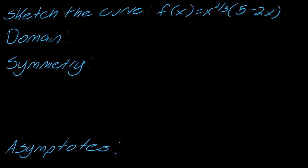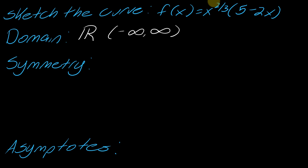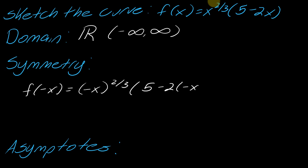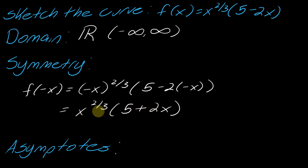For my domain: this rational exponent is really a cube root, and with cube roots the domain is all real numbers. So the domain of the whole thing is all real numbers. For symmetry, plug in negative x and work it out — that gives x^(2/3) times (5 plus 2x), which is neither negative f(x) nor f(x) itself, so there is no symmetry. And for asymptotes, there are none in this case either.